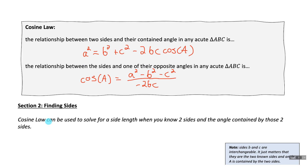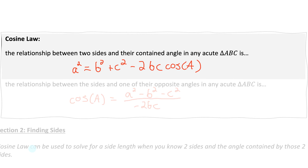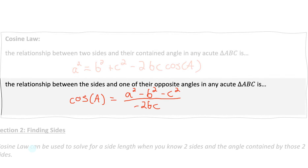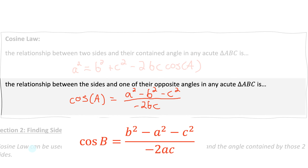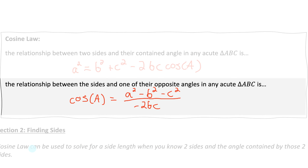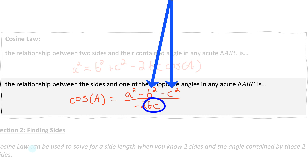In the top formula for finding a side, the angle used is always the one opposite the side we're solving for — it's the angle contained by the two known sides. In the version for solving an angle, the first side in the numerator is opposite the angle we're solving for. For example, to solve for angle B, the formula would start with B squared, then subtract A squared and C squared. The denominator contains those two remaining sides multiplied by negative 2.